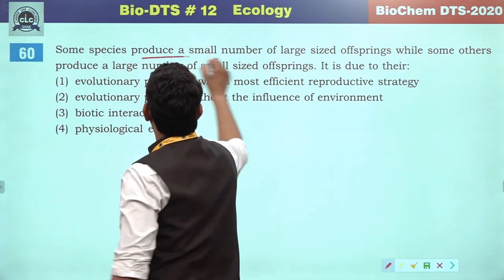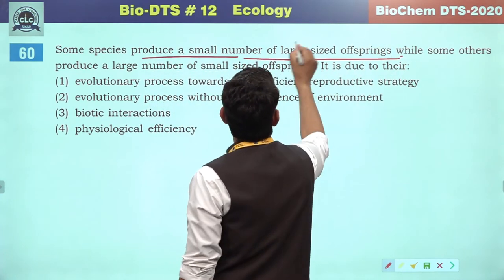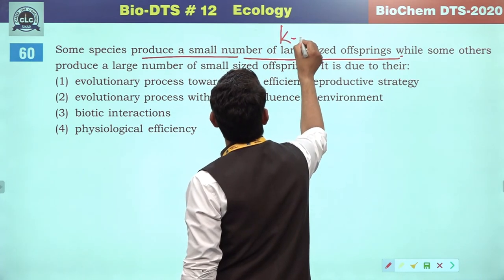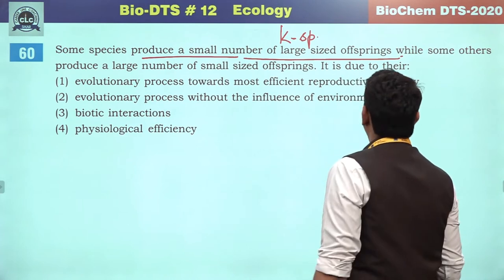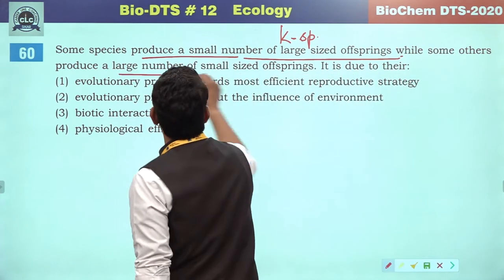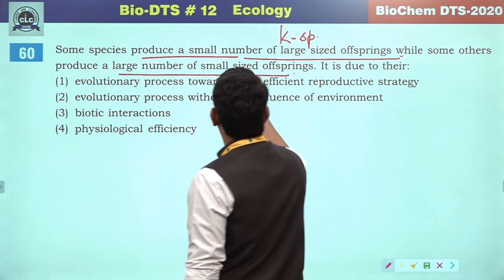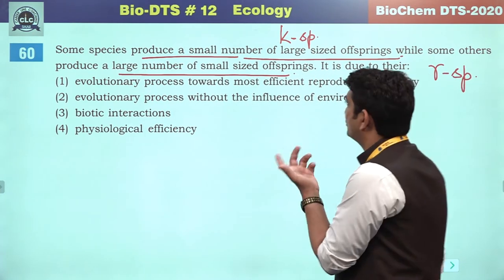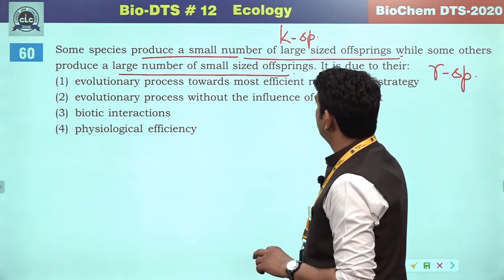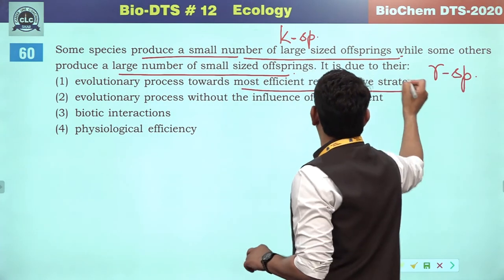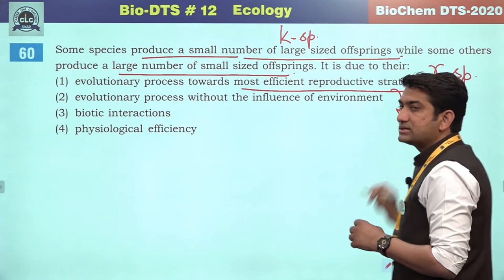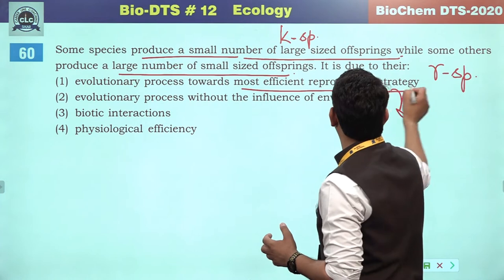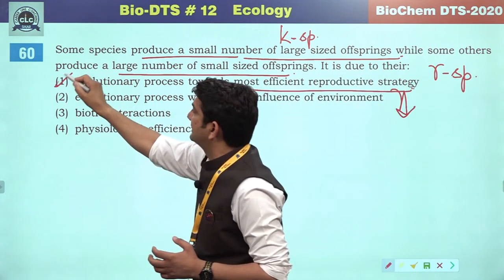Some species produce a small number of large-sized offspring — these are K-species or K-selected species. Others produce a large number of small-sized offspring — these are r-species. This is due to their evolutionary process towards the most efficient reproductive strategy. So the first will be the correct answer.